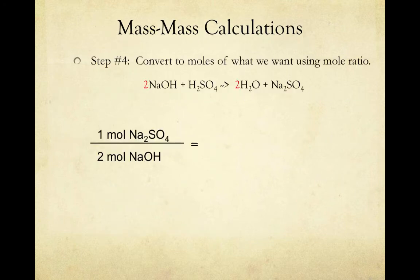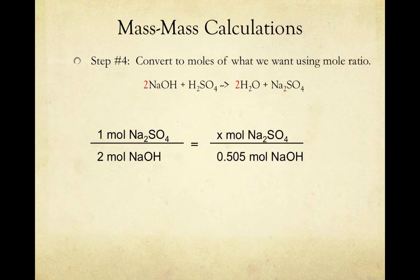Again, our mole ratio is 1 mole of Na2SO4 for every 2 moles of NaOH. And our other side of our equation is going to read x moles of Na2SO4 is equal to 0.505 moles of NaOH. In other words, if 2 moles of NaOH will give us 1 mole of Na2SO4, how many moles of Na2SO4 will 0.505 moles of NaOH give us? Solving for x, we find that this many moles should give us 0.253 moles of Na2SO4. This should make sense, since you should get half as much Na2SO4 as you have NaOH.